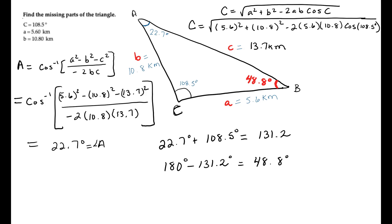I'm sorry, the angle B rather, not side B. Angle B is 48.8 degrees. So we have the three missing pieces of our triangle, and we found them using the law of cosines. So if this video was helpful, be sure that you like and subscribe.